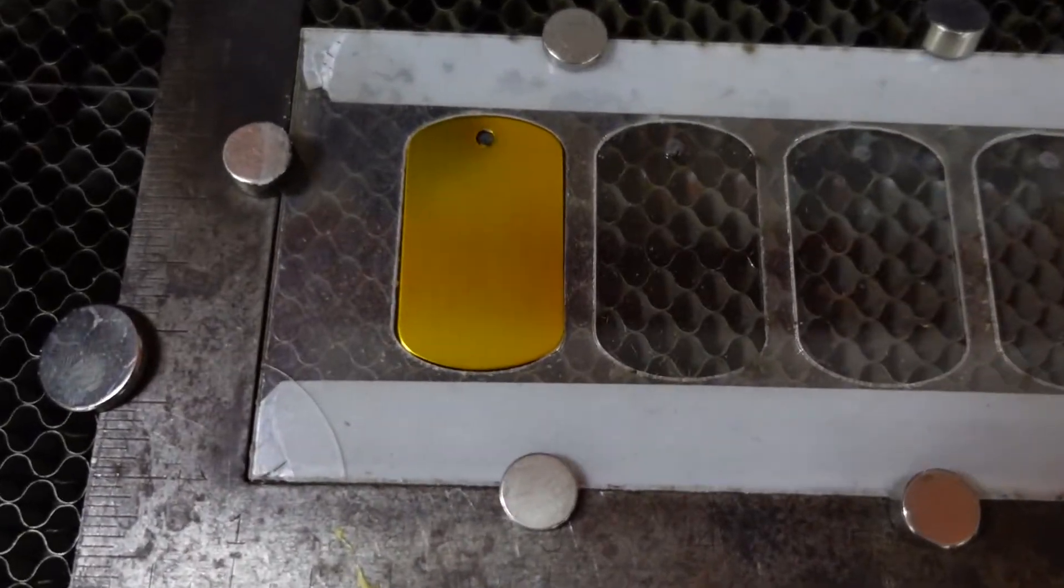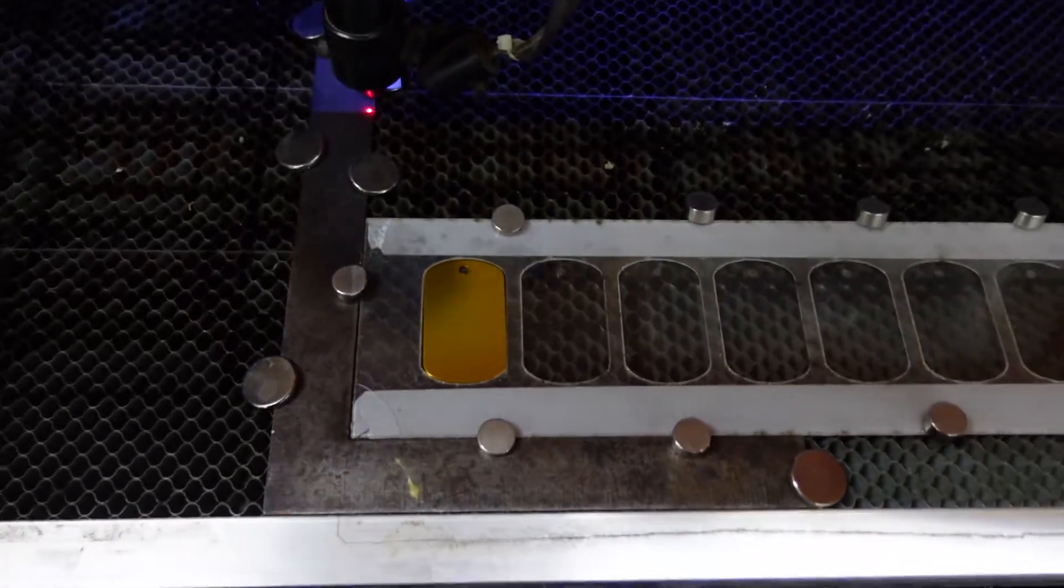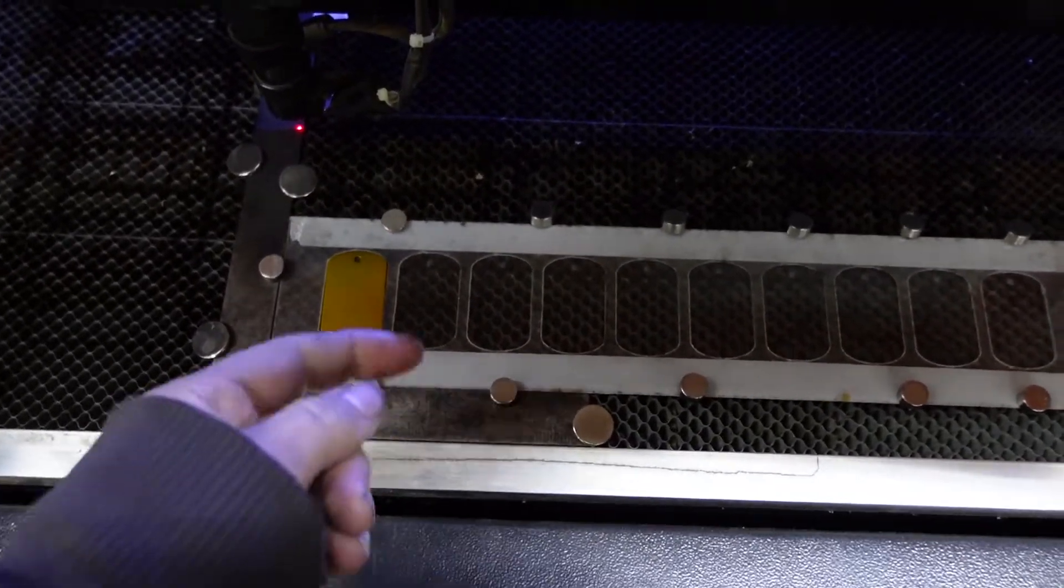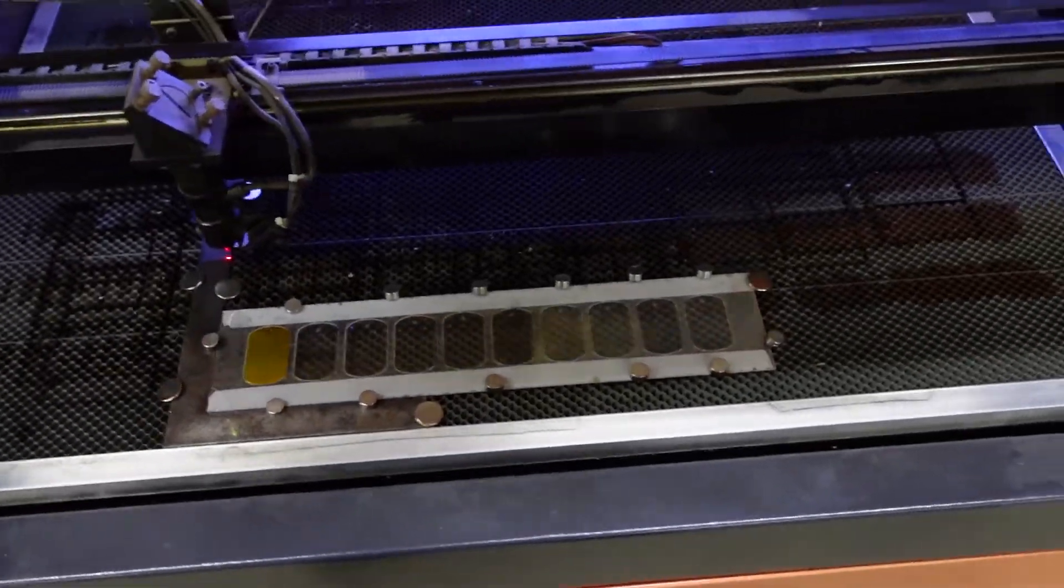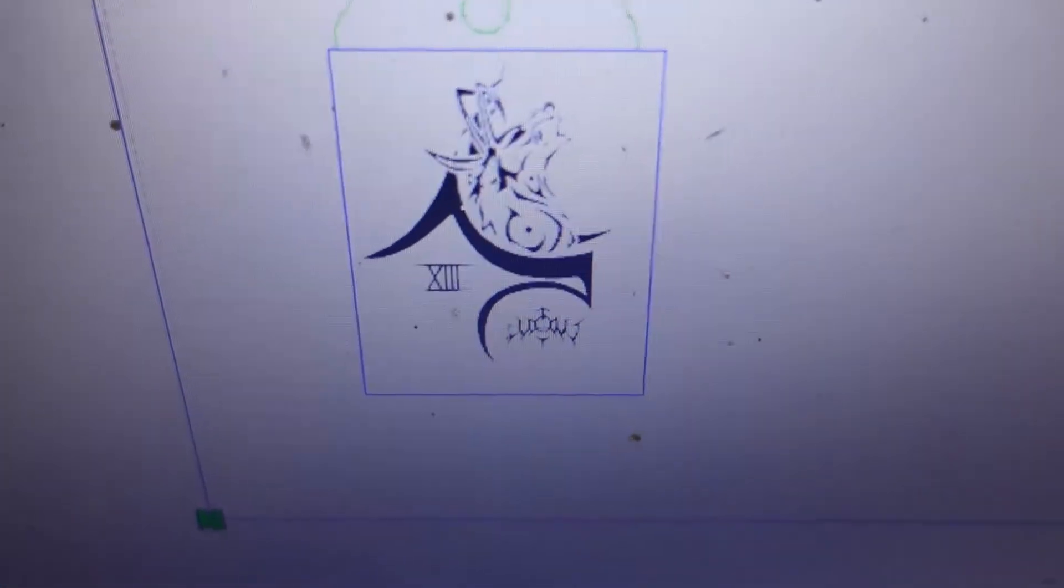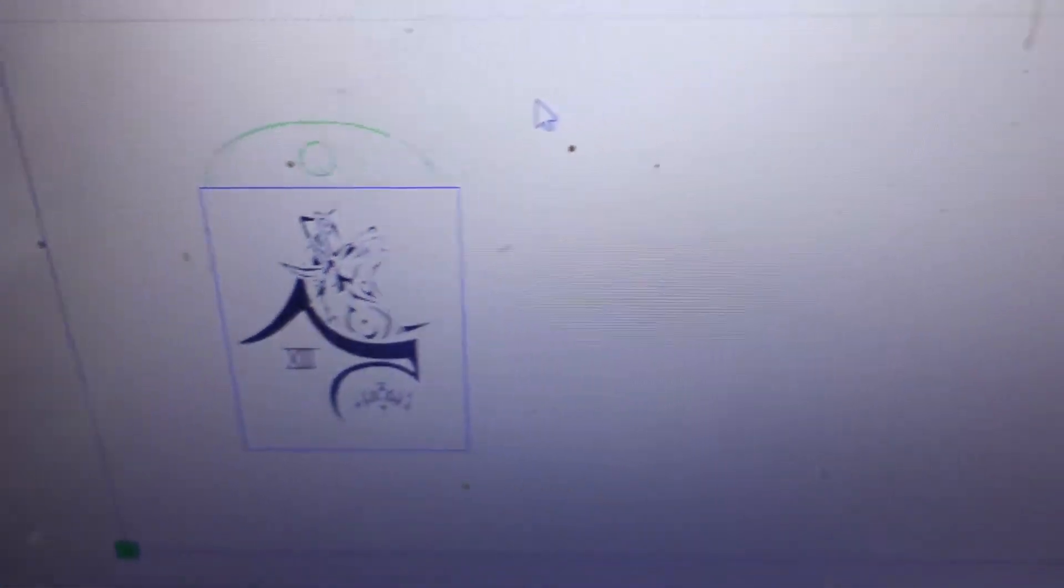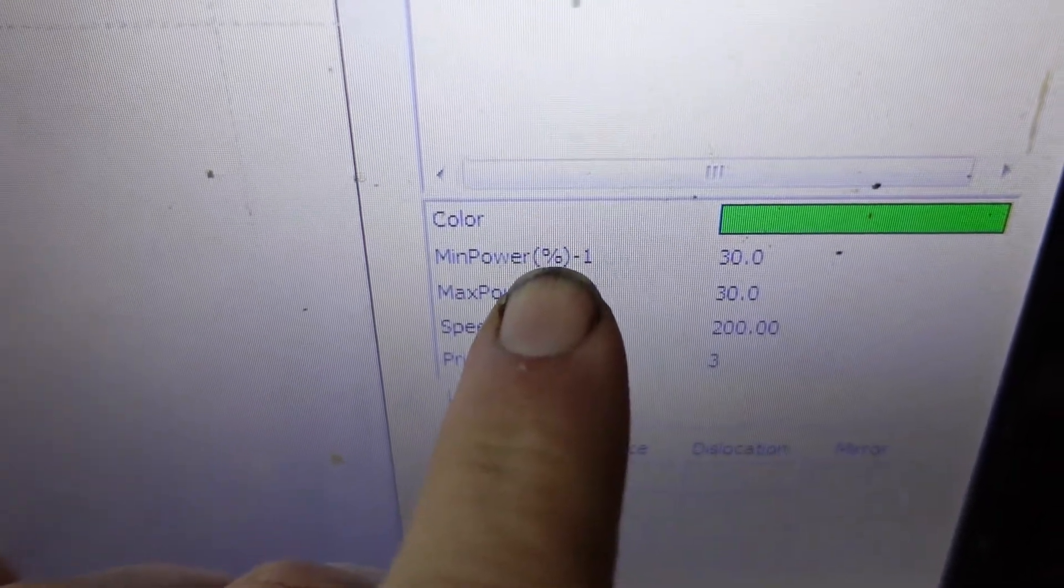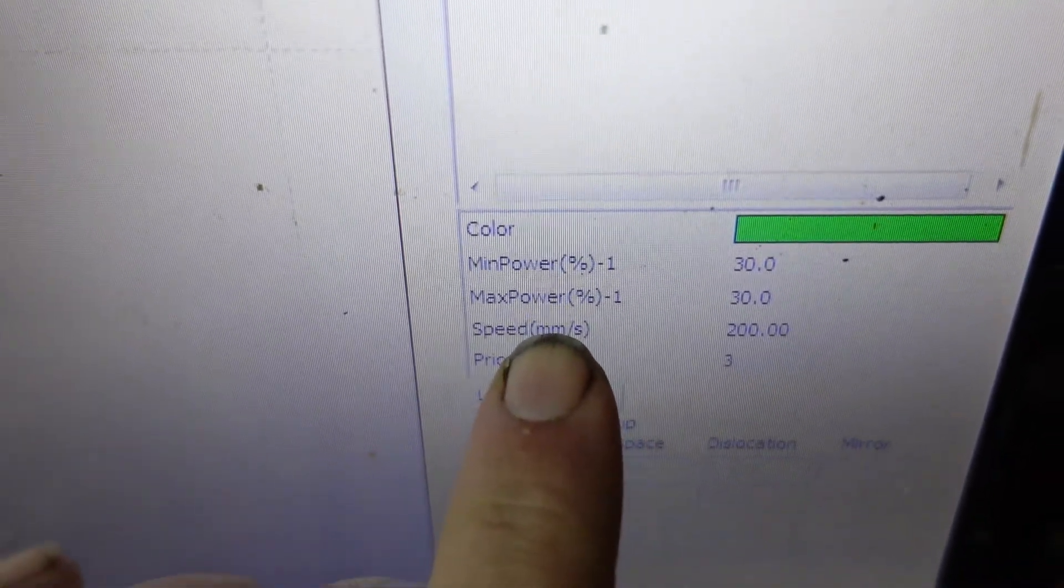Alright so this is the anodized aluminum dog tag that we're going to be engraving on today. I'm not going to explain anything about my jig. If you guys are really curious on how I put that together just drop me some comments and I'll make a short video on that. But heading on over, this is the image that we're going to be putting on the dog tag today and we are using 30% power at 200 millimeters a second.